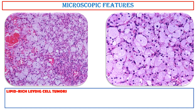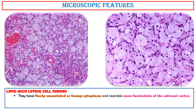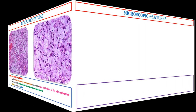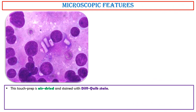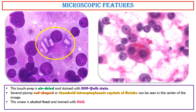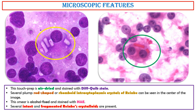Lipid-rich Leydig cell tumors have finely vacuolated or foamy cytoplasm and resemble the zona fasciculata of the adrenal cortex. The diagnosis can be challenging due to unconventional appearance. Inhibin immunostain is positive. This touch prep is air-dried and stained with Diff-Quik stain. Several plump, rod-shaped, or rhomboid intracytoplasmic crystals of Reinke can be seen in the center of the image. This smear is alcohol-fixed and stained with H&E; several intact and fragmented Reinke crystalloids are present.